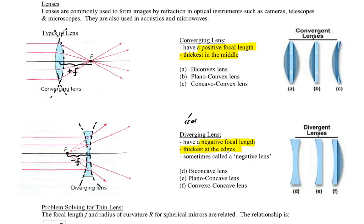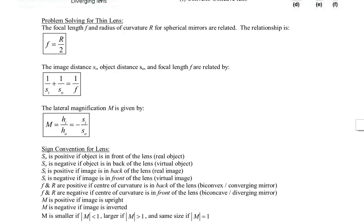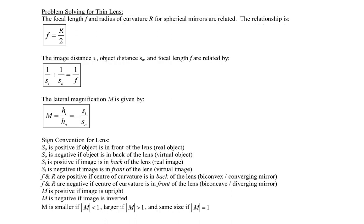I should also point out that in any lens there are two focal points. This is called the primary focus. On the opposite side, equidistant from the center of the lens, is a secondary focus. At the bottom of your notes you'll see the appropriate equations for solving thin lens problems — they're the same as for spherical mirrors. The focal length is still half the radius of curvature, and the thin lens equation and magnification equation are the same, though there are some differences in sign conventions.